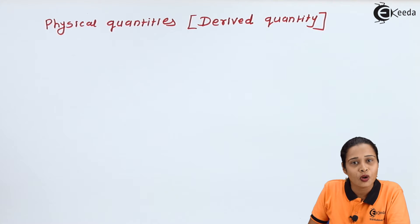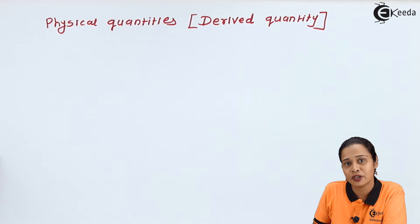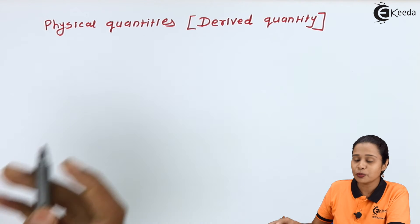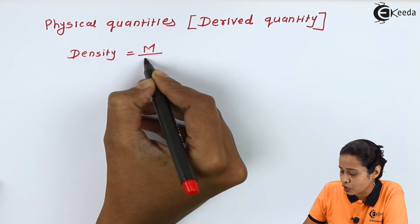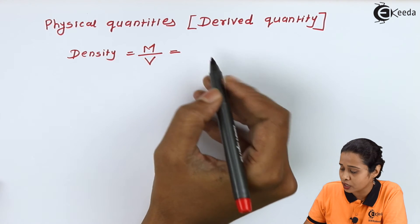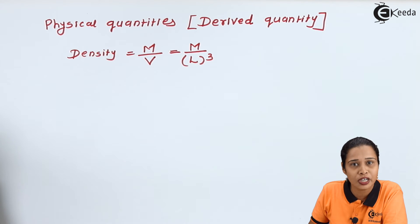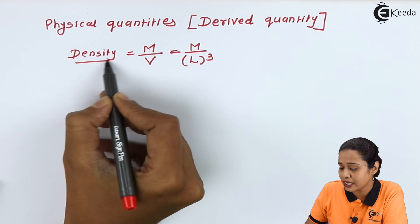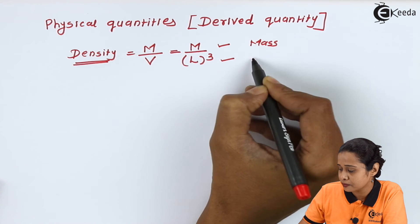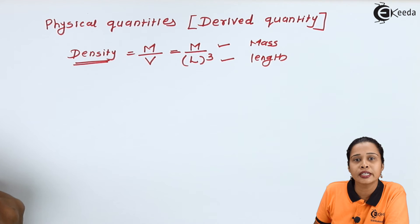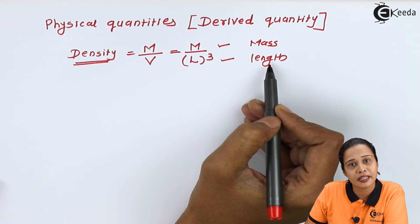Now let us see derived quantities. Derived quantities are quantities which depend on fundamental quantities for their measurement. For example, suppose we want to find out density. Density is mass per unit volume. Mass is a fundamental quantity, and volume can be found using L cubed, where L is length, which is also a fundamental quantity. So to find the density of any material, we have to use two fundamental quantities — mass and length. That is why density is called a derived quantity.